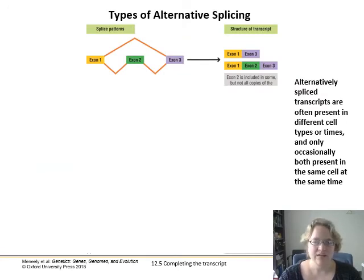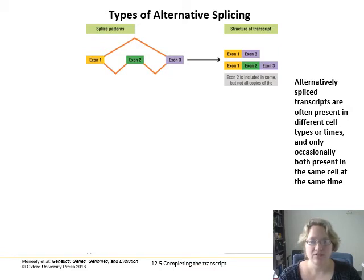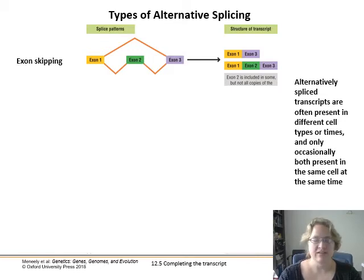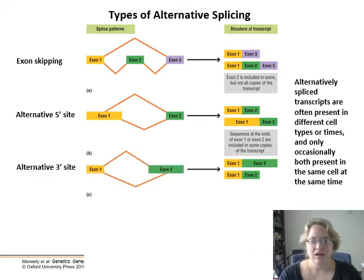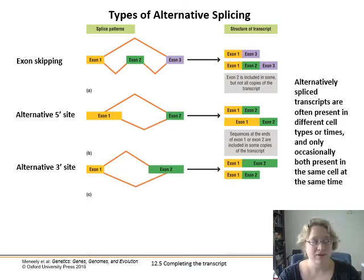The cool thing about eukaryotes is that from one particular gene sequence we can make a bunch of different related proteins, called isoforms. You can have different splicing patterns for one gene. The first is called exon skipping — you could just leave out exon 2. You can have an alternative 5 prime site where occasionally the first exon is cut at a different location, giving two different start sites. The corollary is the alternative 3 prime site, where you could have one ending spot and a different ending spot.